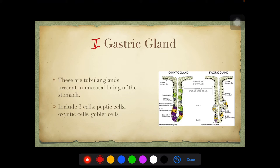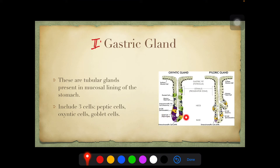The second digestive gland is the gastric gland, present in the stomach. These are tubular glands with straight ducts and branched secretory clusters present in the mucosal lining of the stomach. They are important for protecting the stomach wall from the corrosive nature of HCl. Gastric glands include three cell types: peptic cells, oxyntic cells, and goblet cells.